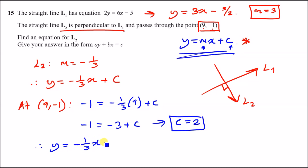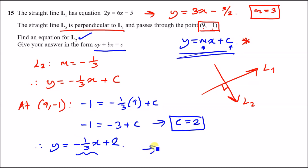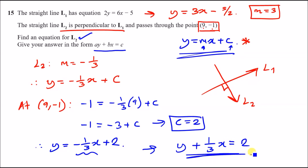Updating our equation, we now have y = −(1/3)x + 2. This is usually the end, but the question asks us to give the answer in the form ay + bx = c. So put y and x on the same left-hand side by moving −(1/3)x to the left by adding it: y + (1/3)x = 2. And that's it — that's the end of question 15.